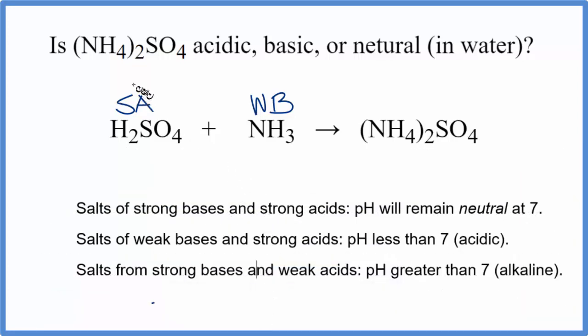So we're looking for a strong acid and a weak base. Here's a strong acid and a weak base. So according to our rules, if we have a strong acid and a weak base form our ammonium sulfate salt here, the pH will be less than 7, so it will be acidic.